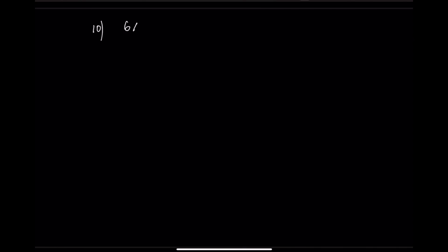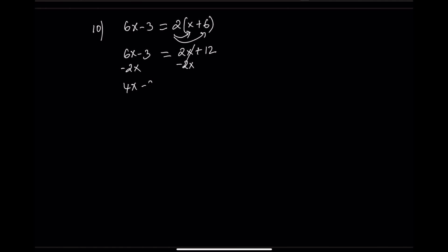Equation 10: 6x minus 3 equals 2 times the quantity x plus 6. Distribute — 2 times x plus 2 times 6 — gives 2x plus 12. Now 6x minus 3 equals 2x plus 12. Step 2: subtract 2x from both sides — 4x minus 3 equals 12. Step 3: add 3 to both sides — 4x equals 15. Step 4: divide by 4.